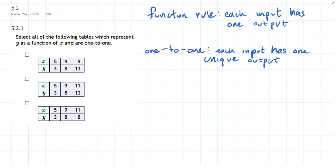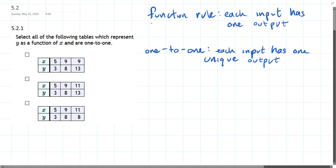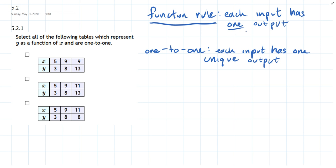We're looking here at what is and is not a function, and then what does one-to-one mean. So to have a function, we have one rule: each input has one output. Now I wrote the word one there because your input has to have at least one output and cannot have more than one output. So that's super important.